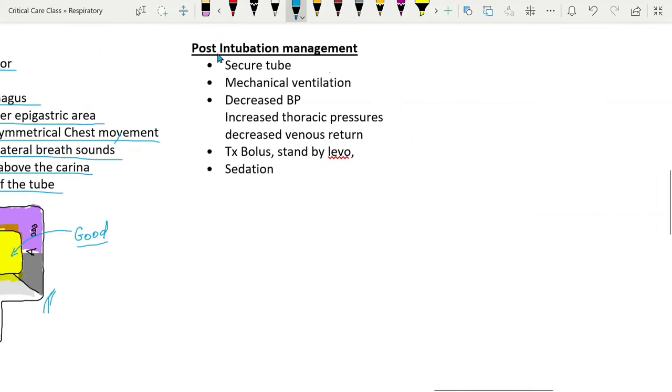Next is post intubation management. Securing the tube with appropriate holder, commercial holder or ties. Respiratory therapist most likely has ventilator set up and ready at the bedside for mechanical ventilation. Decreased blood pressure is common after intubation due to increased intrathoracic pressure which leads to decreased venous return. Also medications such as propofol can cause hypotension. Treatment with bolus of fluids can counteract decreased venous return. And pressors such as norepinephrine can counteract propofol. Maintenance sedation will be prescribed by a provider to keep patients comfortable.